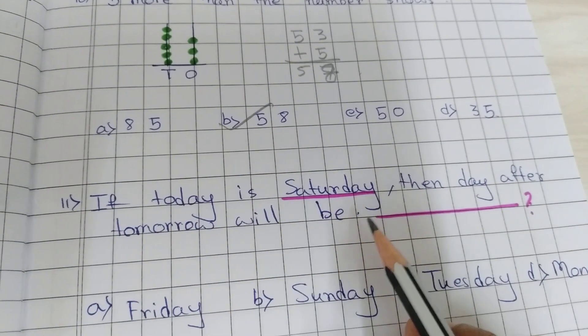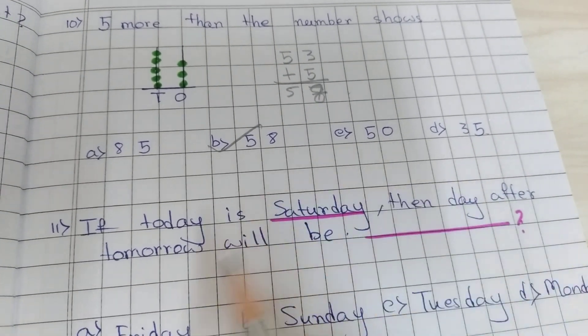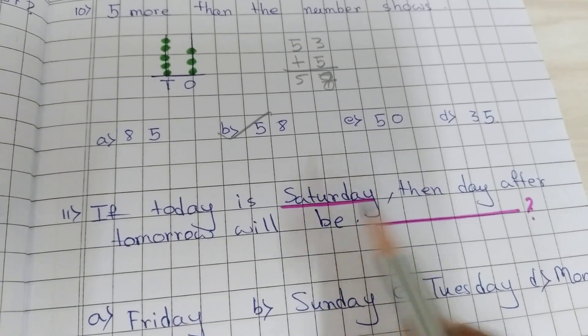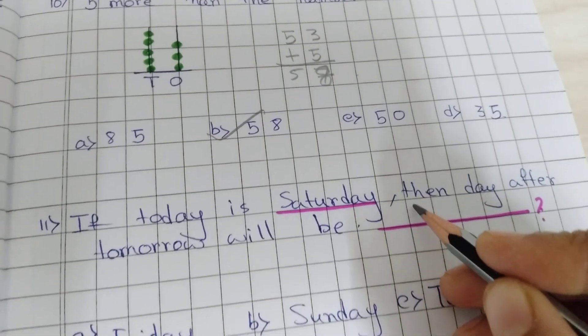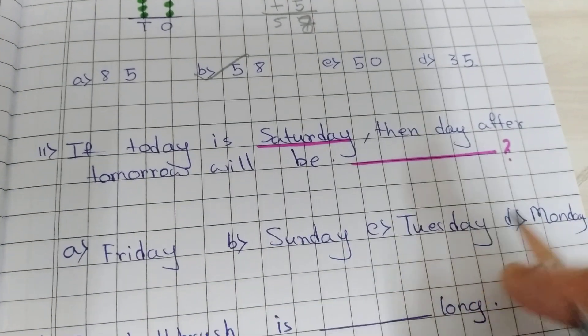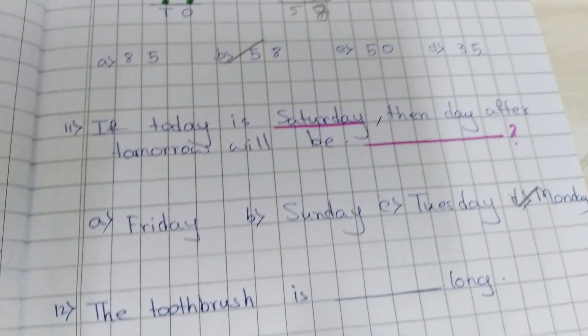If today is Saturday, then day after tomorrow will be, tomorrow will be Sunday and day after tomorrow will be Monday. So option D is correct.